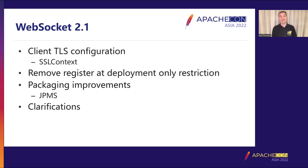Another change is JPMS packaging improvements. WebSocket distributes two jars: a client jar and a server jar. Prior to 2.1, the client jar had client classes and the server jar had both server and client classes — two copies of the same classes, which doesn't play well with JPMS. We've changed it so the client jar has only client classes and the server jar has only server classes with a dependency on the client jar. That eliminates duplication and makes JPMS much happier. There have also been a few clarifications around behavior in certain edge cases.